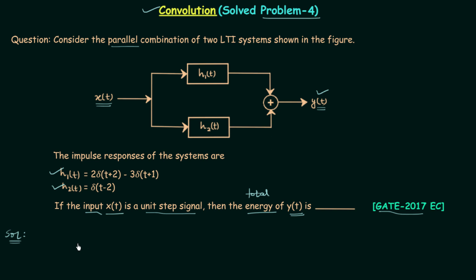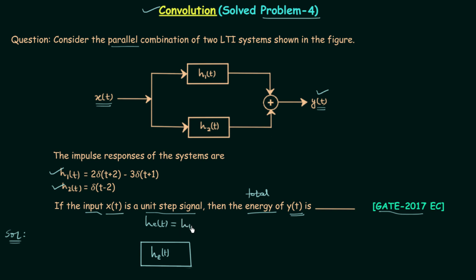We can have an equivalent system whose impulse response we can write as the sum of all the impulse responses. For example, in this case there are two systems connected in parallel, so we can have one equivalent system. I will draw the equivalent system and let's say the impulse response is H_E(t). Since LTI systems are defined using the impulse response, we are focusing on calculating the equivalent impulse response. From the distributive property of convolution, H_E(t) is equal to H1(t) plus H2(t).